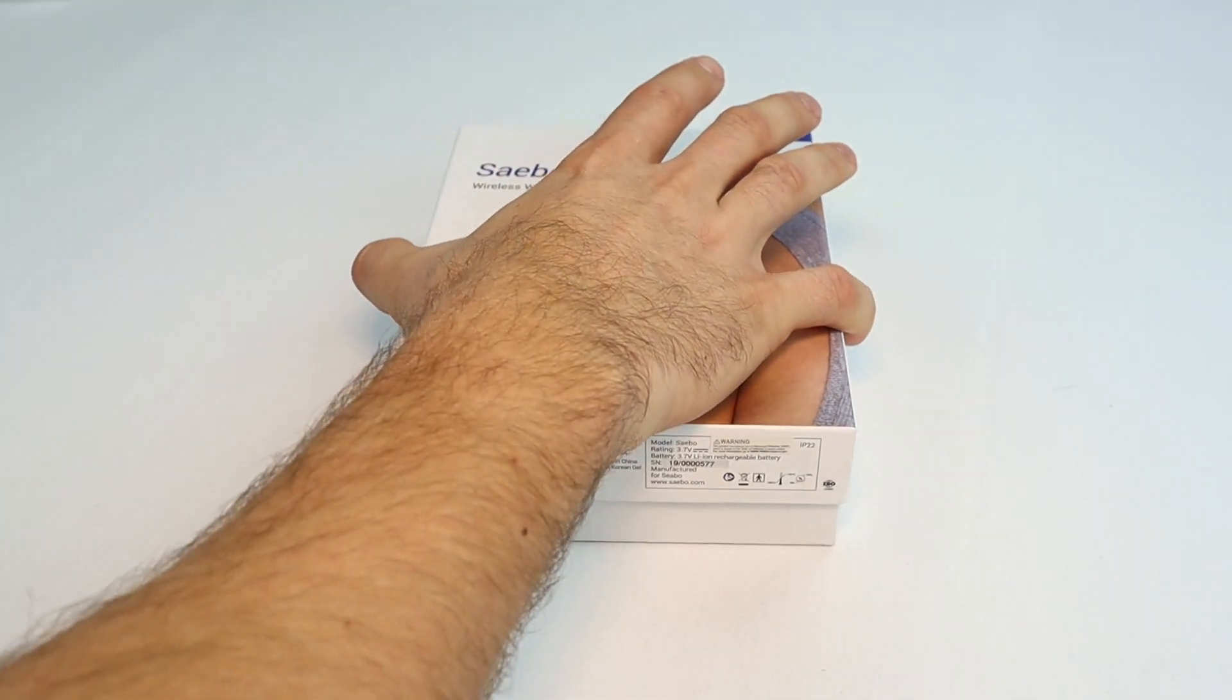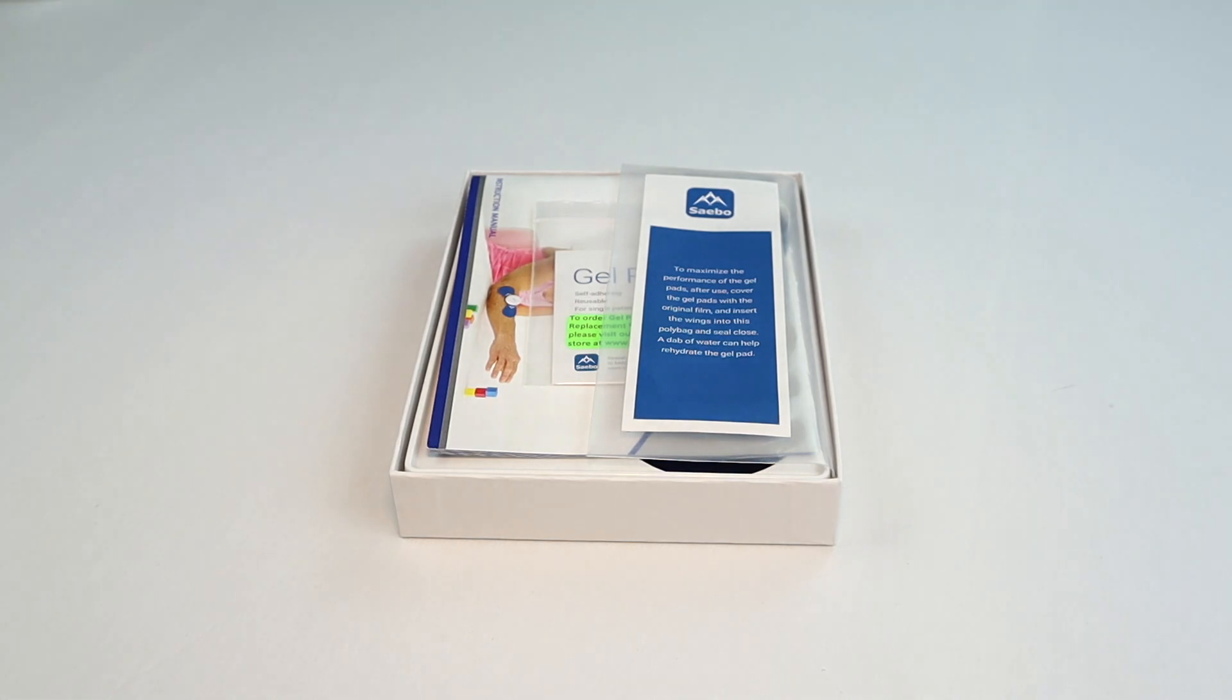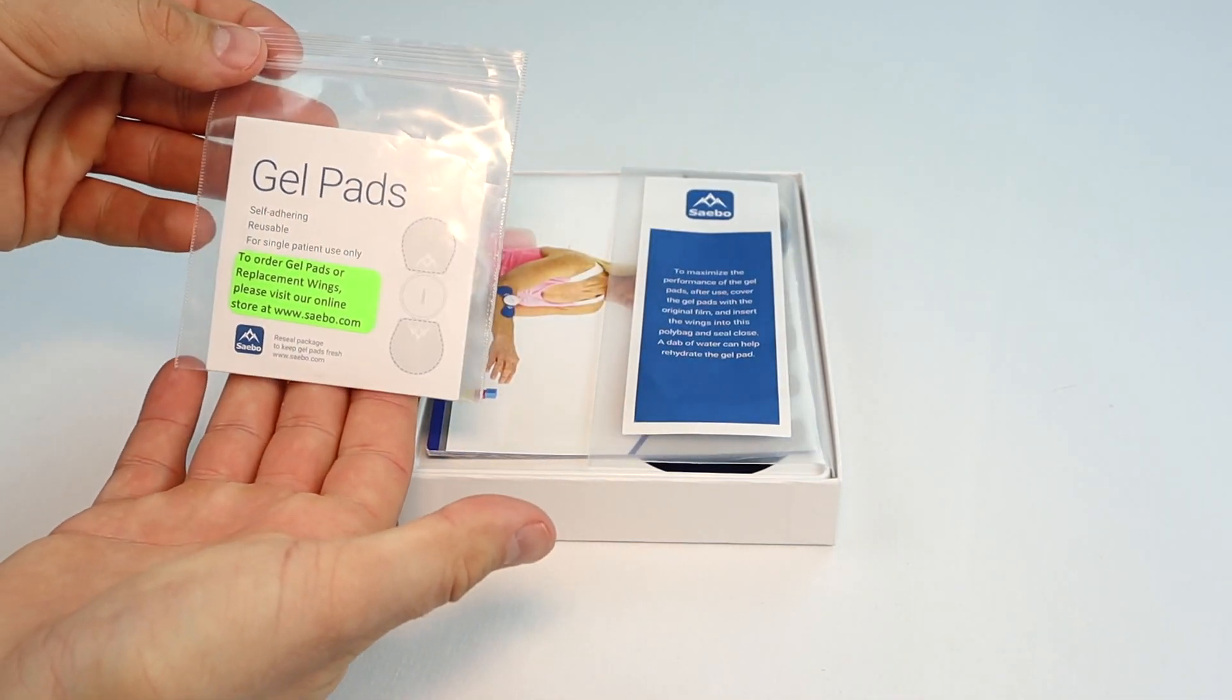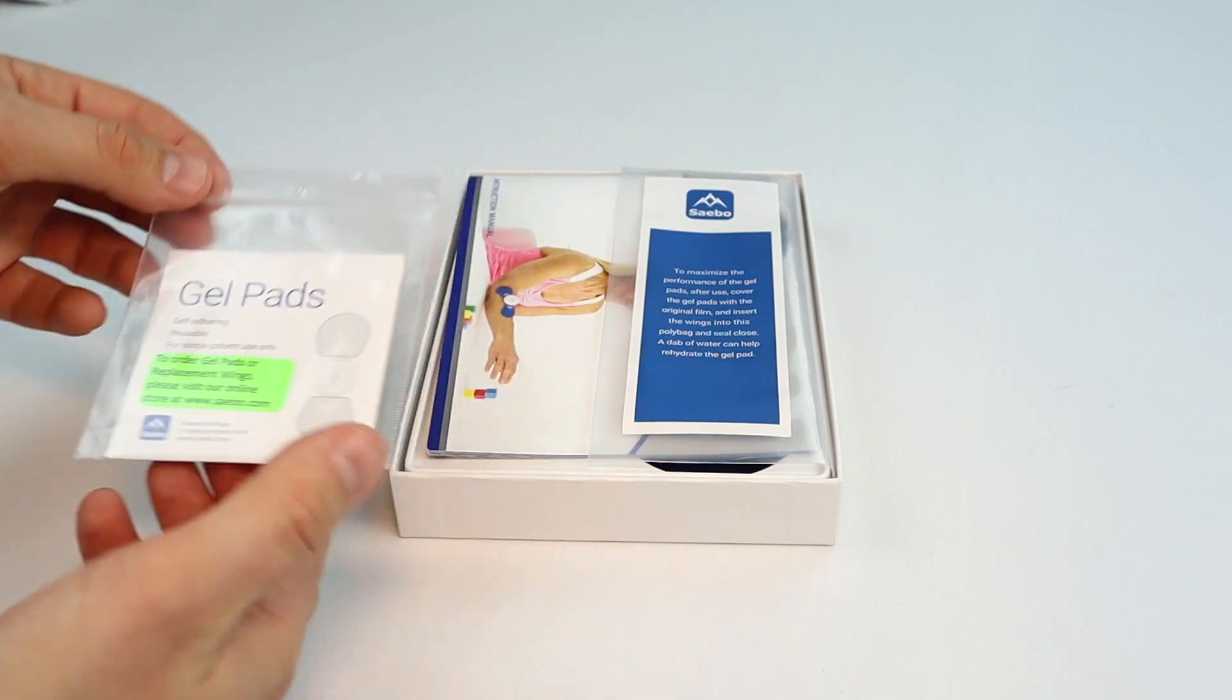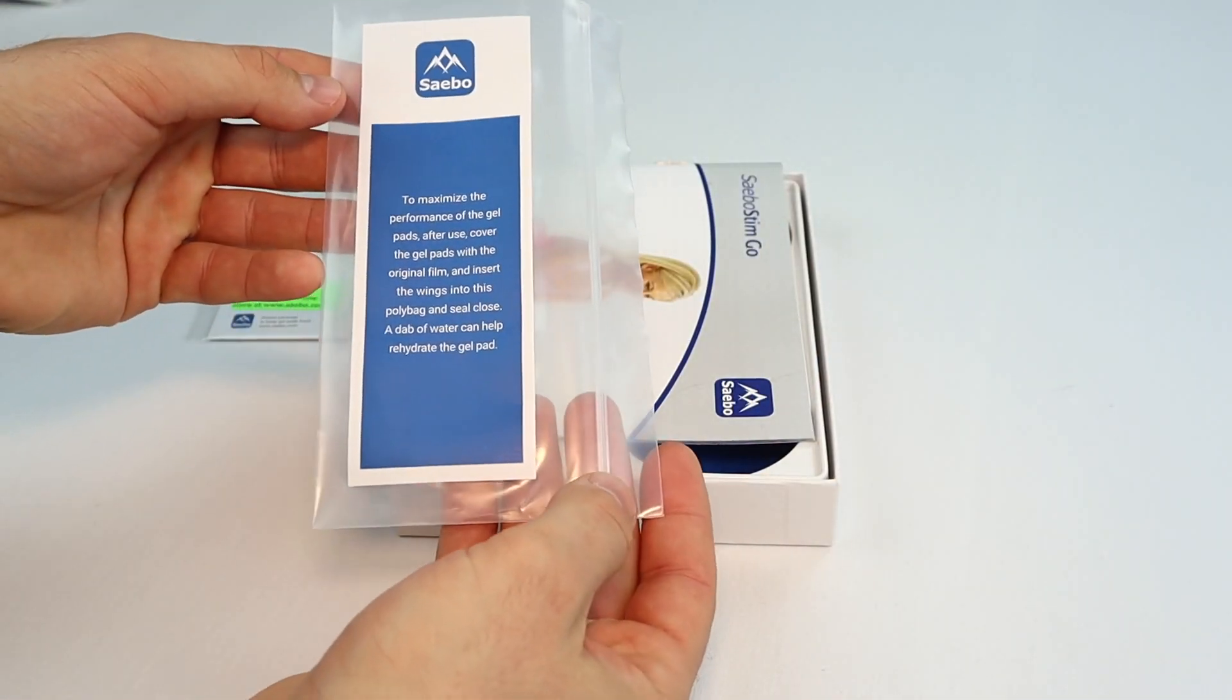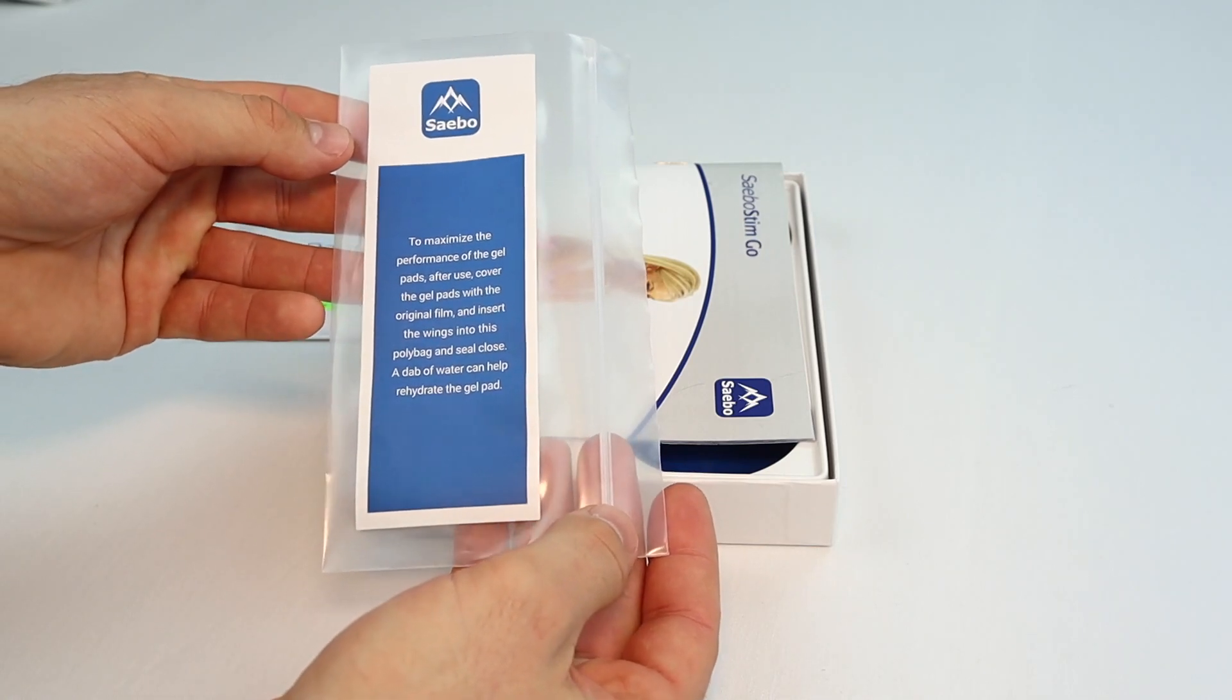To open the box, lift up on the cover and remove it. Here are the gel pads that we will apply in a minute to the wings. Here is a poly bag for keeping your wings and gel pads clean as well as getting the most use out of them.